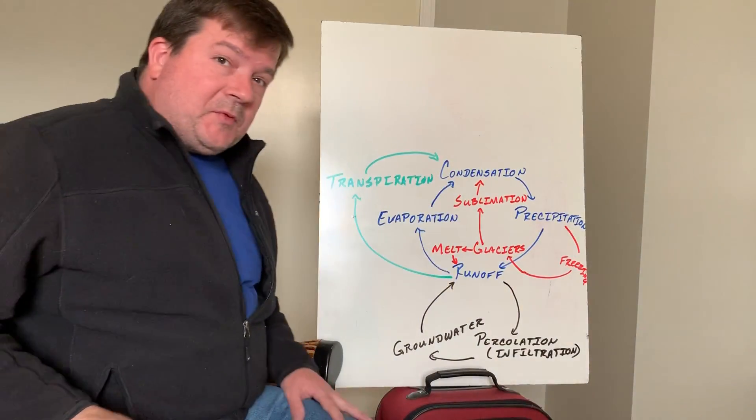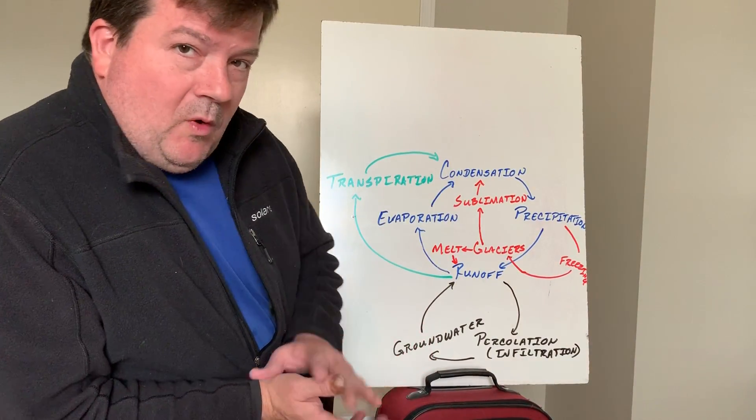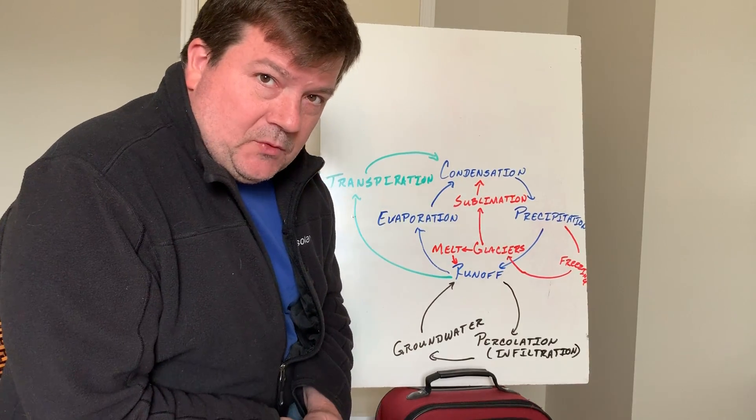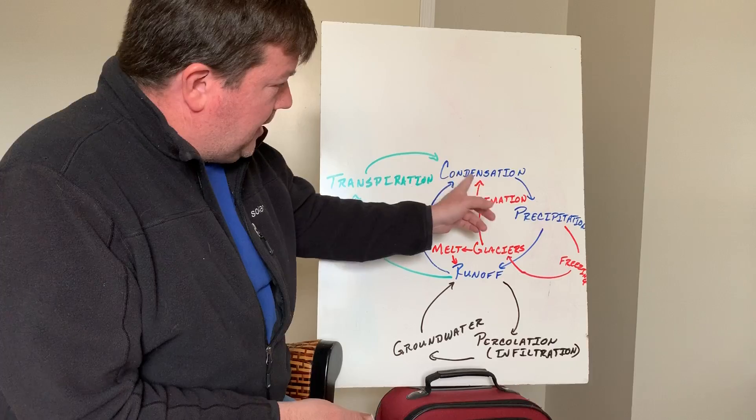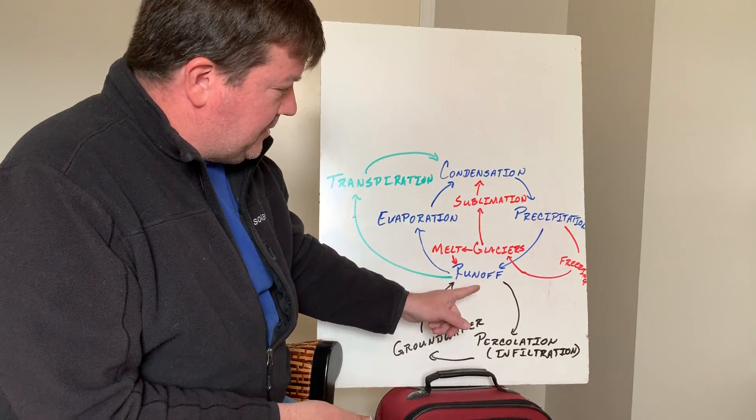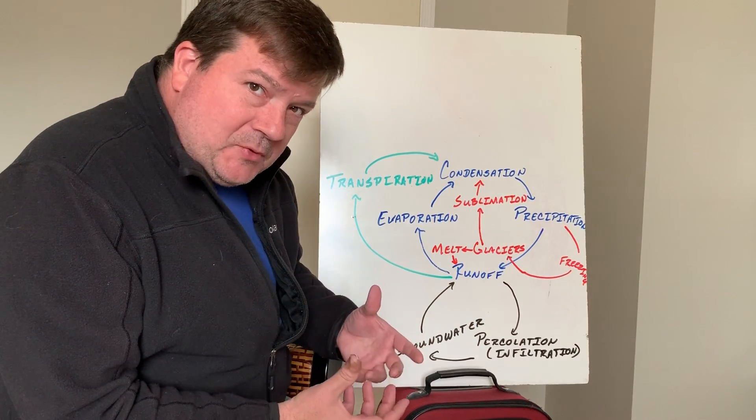Alright, try to ignore everything but the blue for a minute. So when you do a water cycle, the simplest way is to start with the four main things: you have evaporation, condensation, precipitation, runoff. That's your most basic water cycle, your four basic steps.